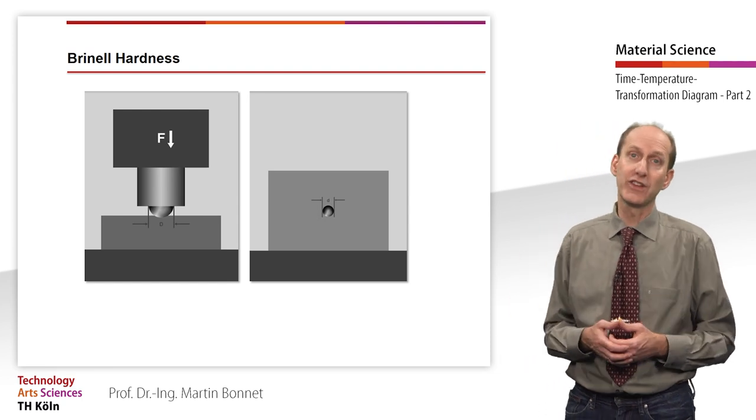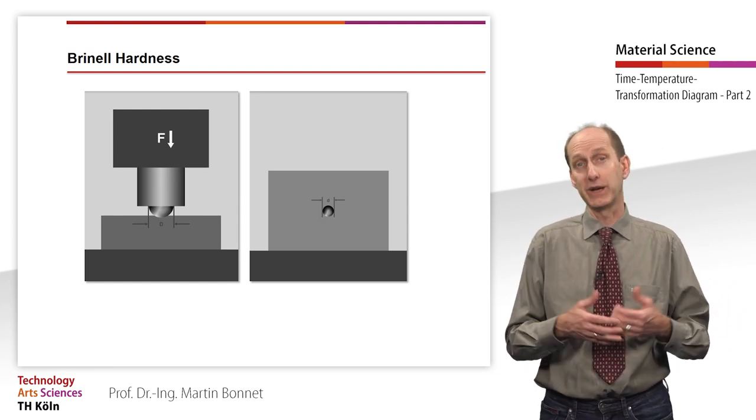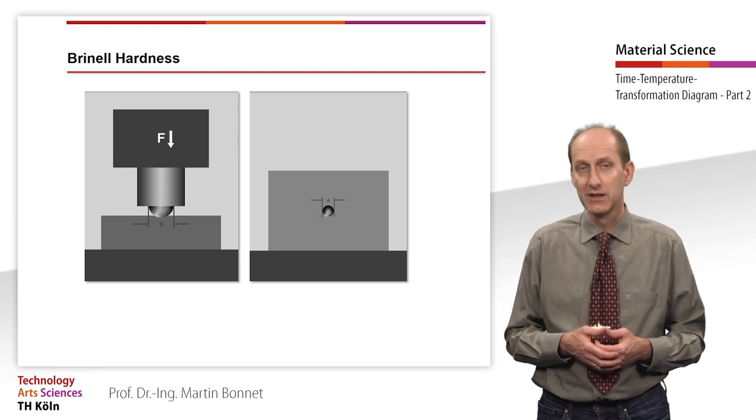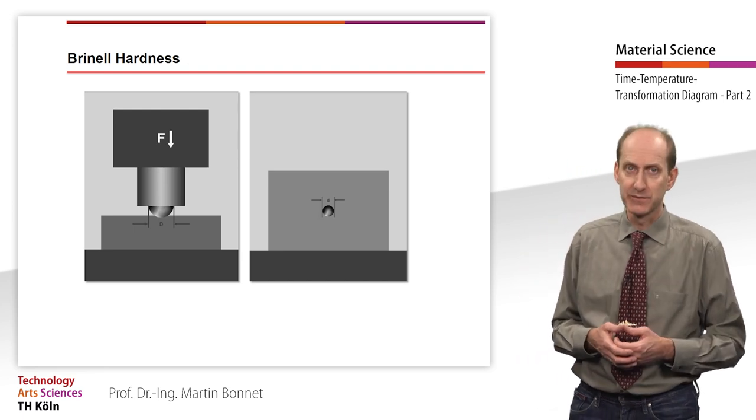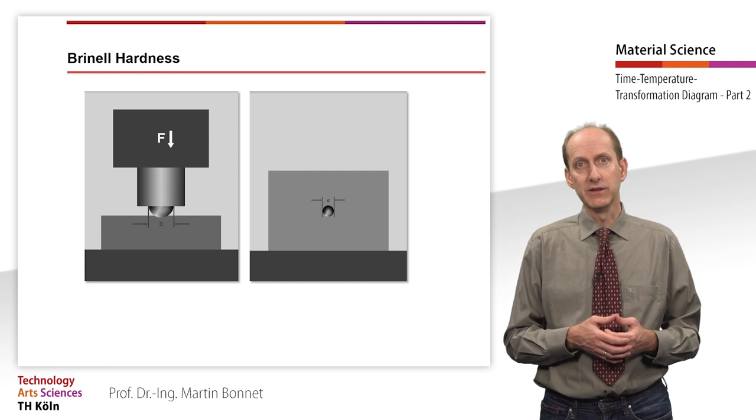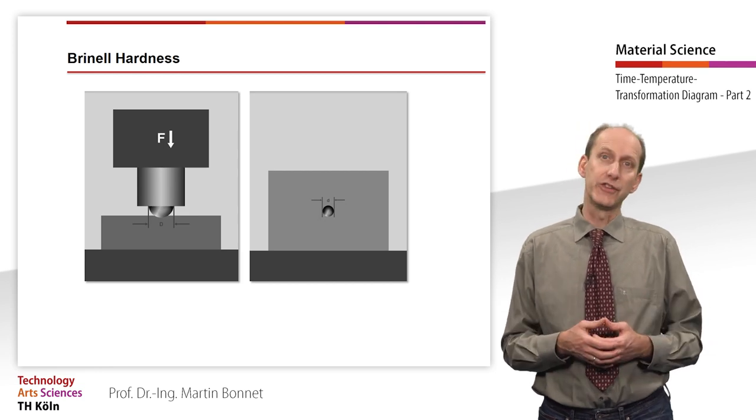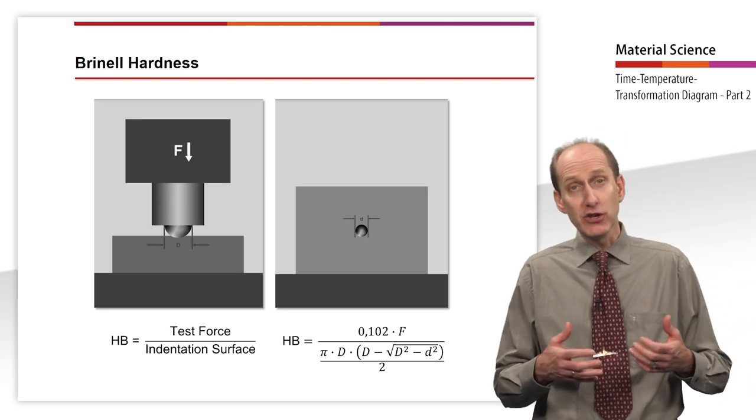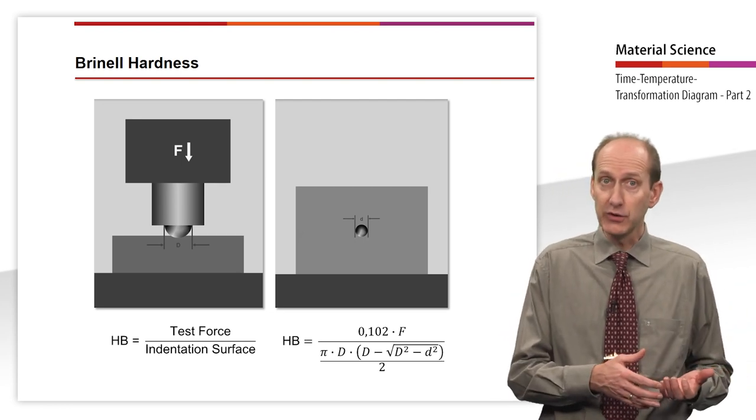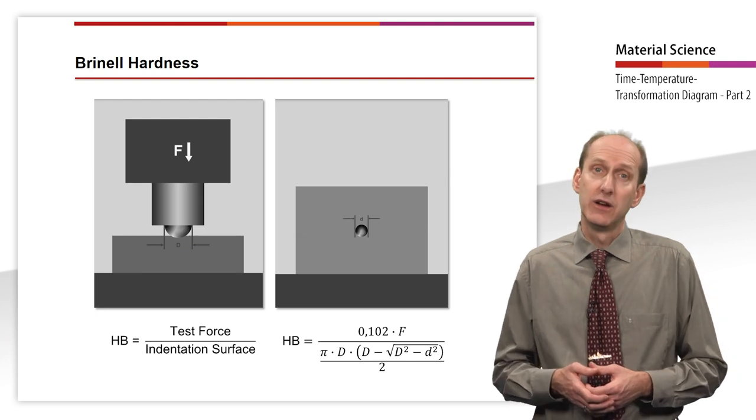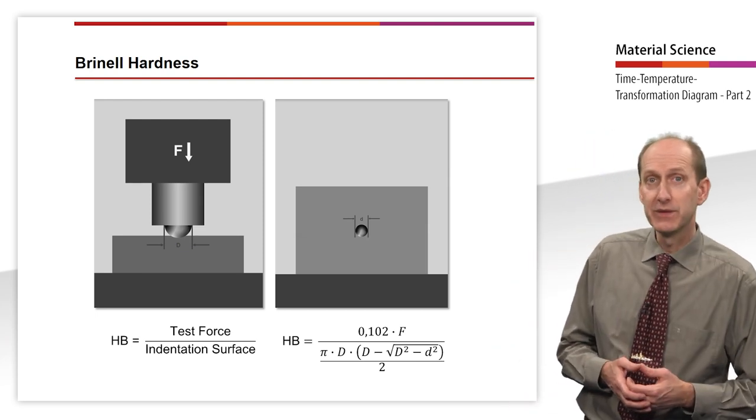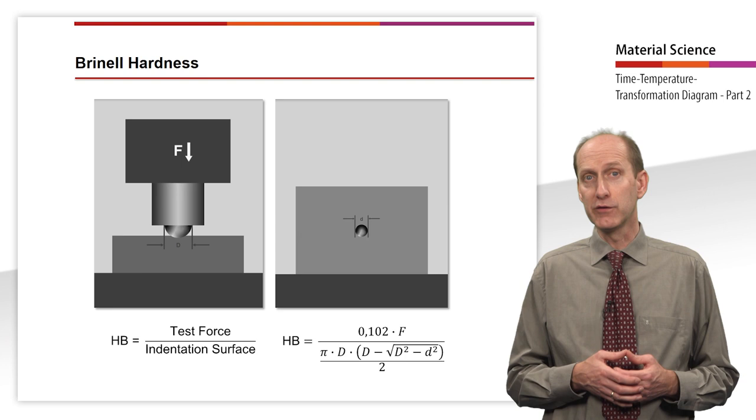Different test forces are used depending on the expected material hardness. The diameter of the impression the test specimen leaves on the surface of the workpiece is measured. The Brinell hardness is defined as the ratio of the test force to indentation surface. The Brinell hardness Hb is determined from the following variables.